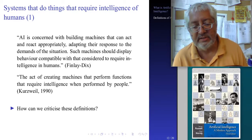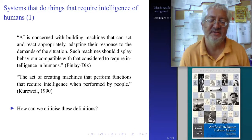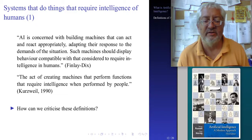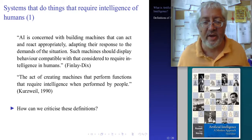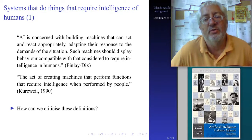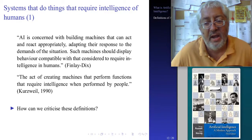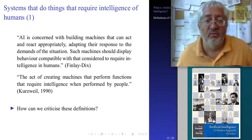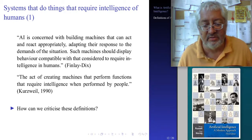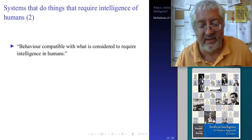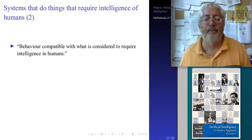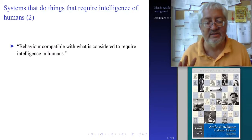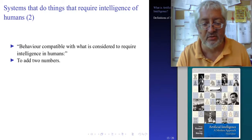Think for a moment — how can you criticize these definitions? Is this a good definition? Look at the Kurzweil definition: 'the act of creating machines that perform functions that require intelligence when performed by people.' Is this really a good definition? The first definition — behavior compatible with what is considered to require intelligence in humans — obviously has some problems.